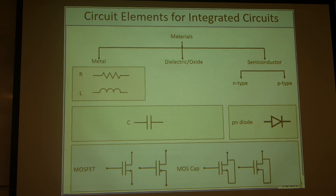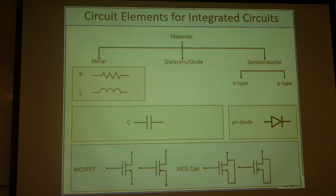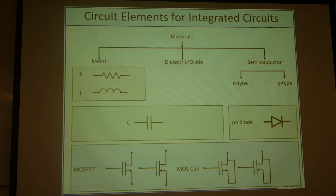For the semiconductor, it has a conductivity between 10⁻⁸ and 100 Siemens per centimeter. We can make a famous PN diode using this semiconductor material if we dope N-type and P-type atoms into the semiconductor. And finally, if we merge these three materials all together, we get a metal oxide semiconductor field effect transistor, which is the most widely utilized transistor in the industry.